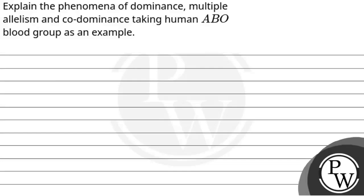Hello, buddy. Let's read the question. The question says, explain the phenomena of dominance, multiple allelism and co-dominance, taking human ABO blood group as an example. So, let's try to answer this question. We understand the key concepts. There are three key concepts that need to be studied.